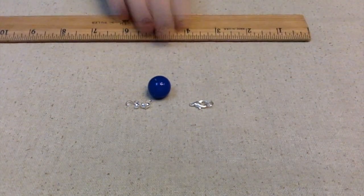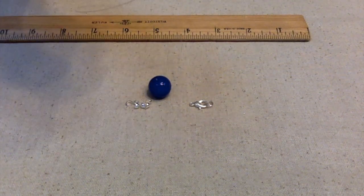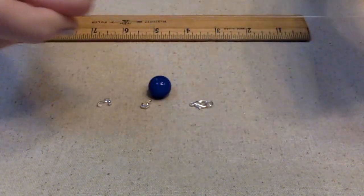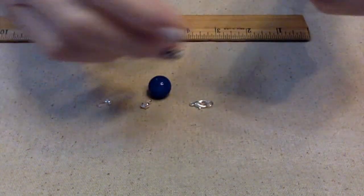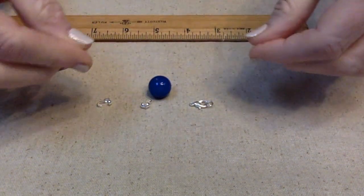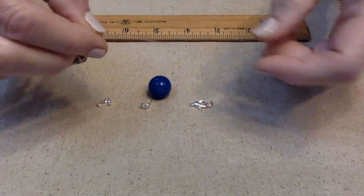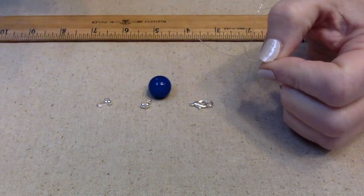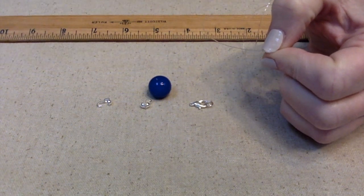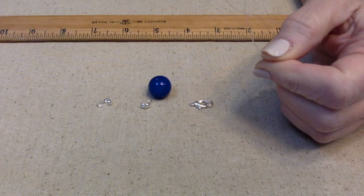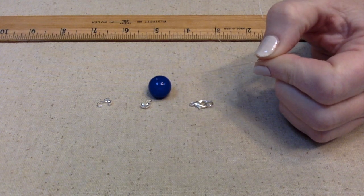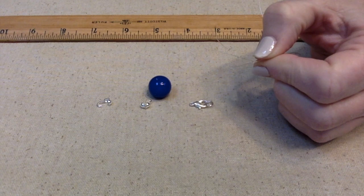You also need something to measure with and you need some monofilament beading wire of some sort. Those of you who are beginners, if you're not for sure you want to continue on with making jewelry, if you're just trying to figure out if you like this or not, I suggest getting 20 pound test fishing line. That actually works quite well. And to be honest with you, it's pretty much the same thing as a lot of the monofilament beading wire.